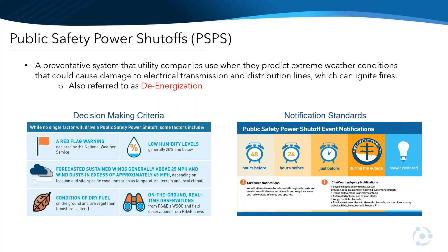The de-energization events are looming. It's clear that you need to have some sort of backup power source if you want to ensure consistent electricity for your home or business. The CPUC knows that, and that's the driving force behind the changes we've seen in the SGIP program and the increased budget for equity resiliency. The CPUC can't guarantee the events won't happen, but they can support incentive programs to help people get battery backup — especially those most in need of financial support and most impacted by the outages.